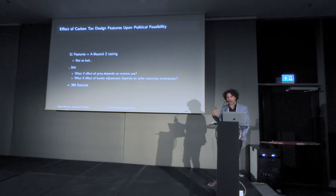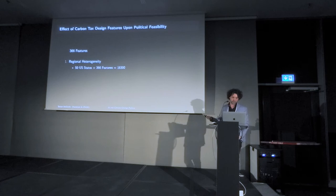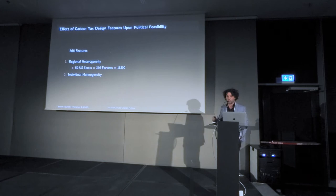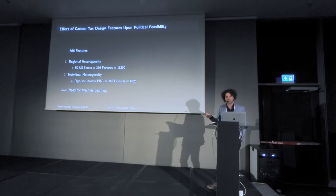Looking at pairwise comparisons, we've already racked up about 366 combinations. But if we introduce regional heterogeneity — looking at US states — we're up to close to 20,000 things we're interested in estimating. If we look at individual heterogeneity, how individuals respond to different features, even simple baseline characteristics like age, sex, income, and party identification already lead to about 4,000 features. So to push things forward, we really need machine learning to deal with this high-dimensional parameter space in a robust way that isn't prone to overfitting.